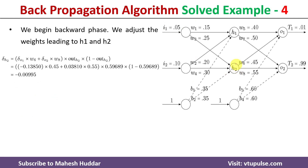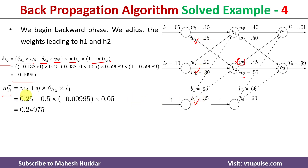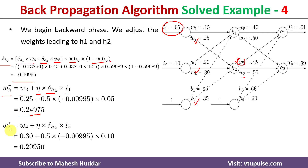To calculate error at h2: δ_h2 = (δ_o1·w6 + δ_o2·w8) · out_h2 · (1 − out_h2). Substituting all values gives δ_h2 = −0.00995. We then update: w3 = w3 + η·δ_h2·i1 = 0.24975, and similarly compute the updated values of w4 and b2. This completes all hidden layer weight updates.